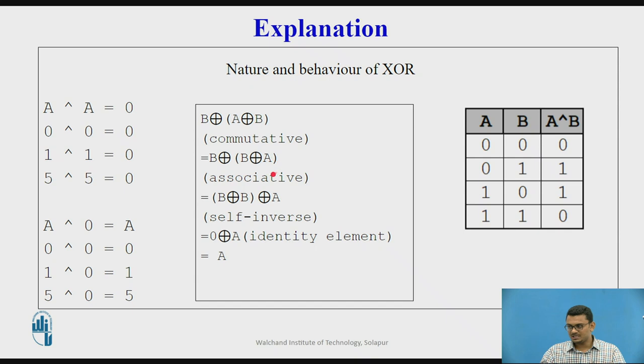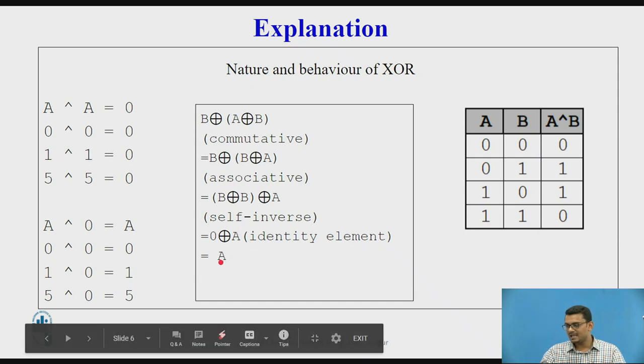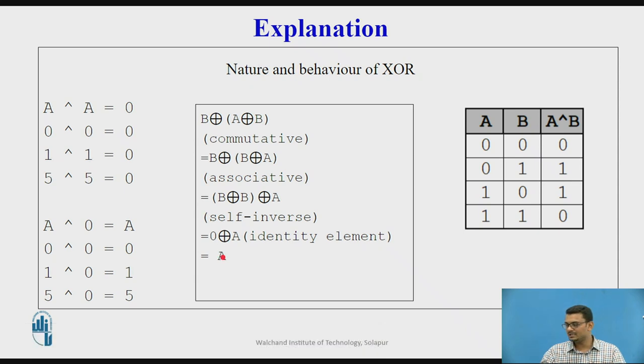By the associative property, to cancel out the common elements, B and B can be associated together which will turn into a 0 later, and just the unique element A will remain. So 0 XOR A at the last step gives a result as A, and this is the way that we are going to use XOR to get the unique element.